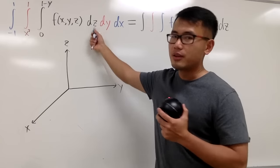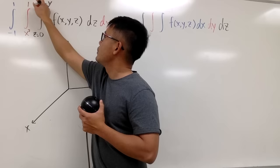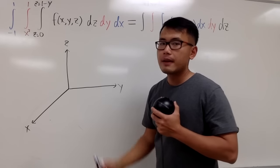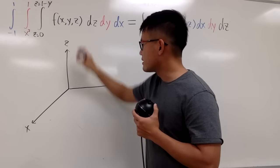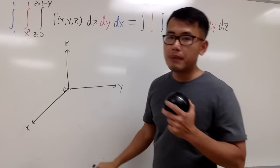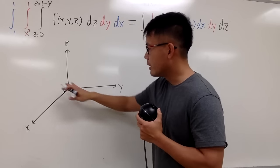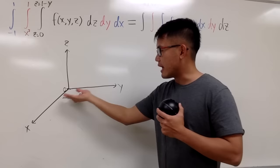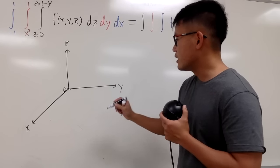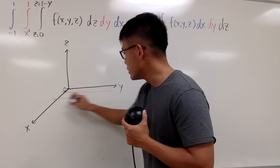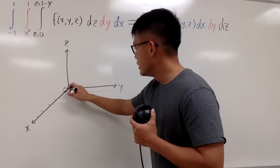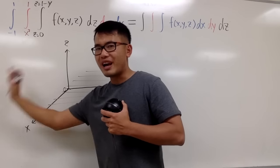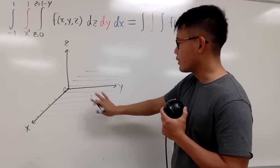We have dz, so z goes from 0 to z equals 1 minus y. We don't have any x at the moment, so we can focus on the yz plane. When z equals 0 — that's right here — in space it's actually the whole xy plane. You can imagine it's like the floor of a room. I'll shade this in to indicate we have pretty much all this. I didn't go to the other side because there is no negative y value.